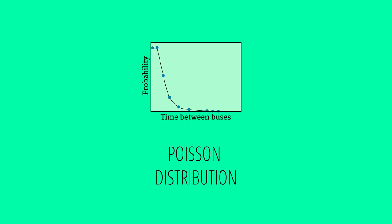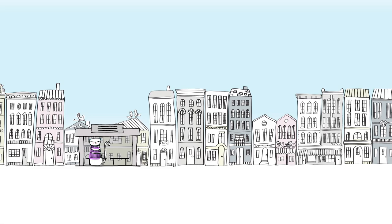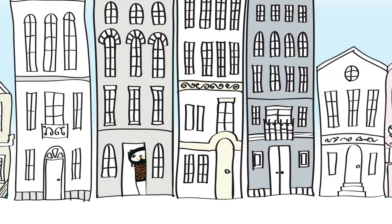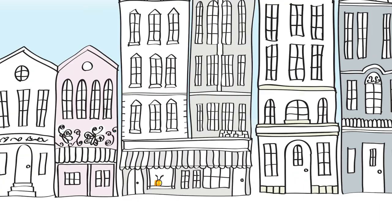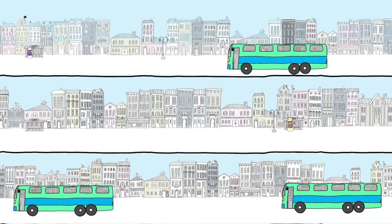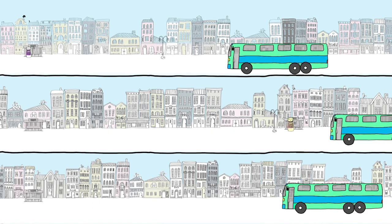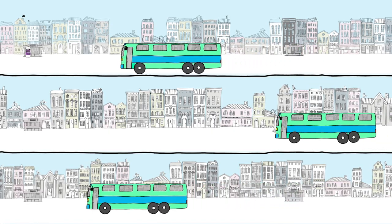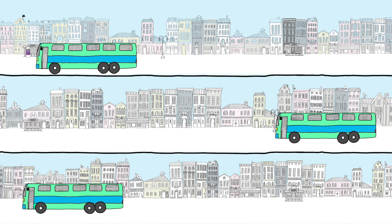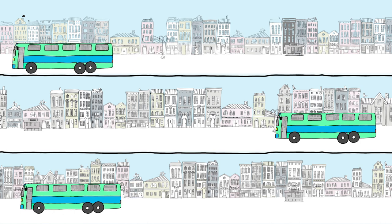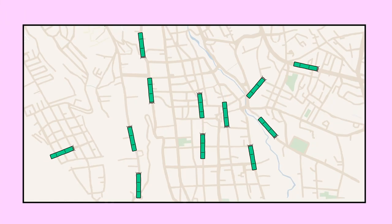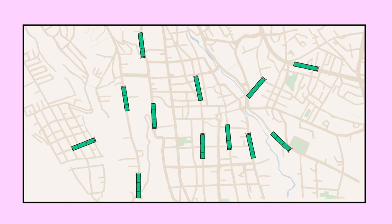But what if bus arrival times are not independent? In the 1970s in Cuernavaca, Mexico, bus drivers would hire spies to sit along their route. The drivers would either speed up or wait at a stop, depending on how long ago their spies said the previous bus left. This spaced out the buses and maximized their profits. In that case, the spacing between buses is defined by a very different probability distribution.